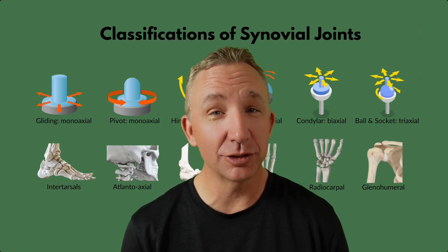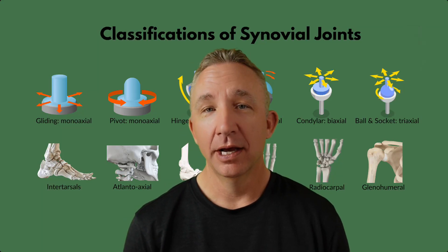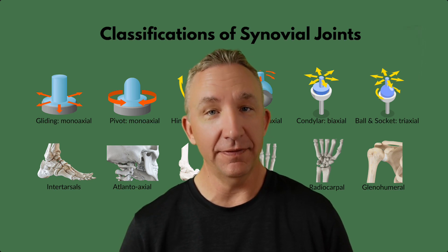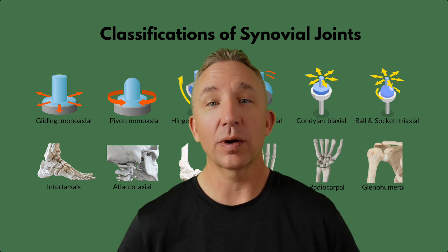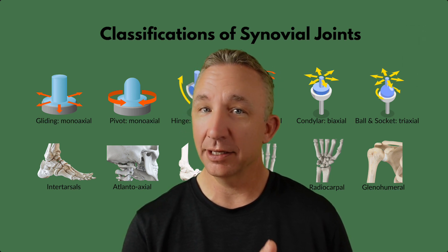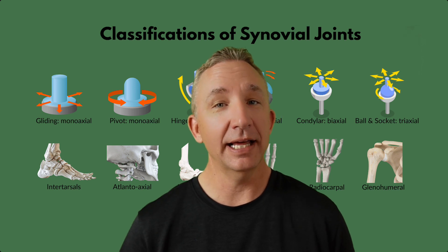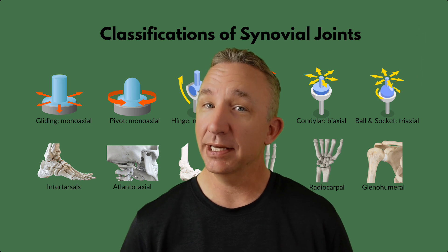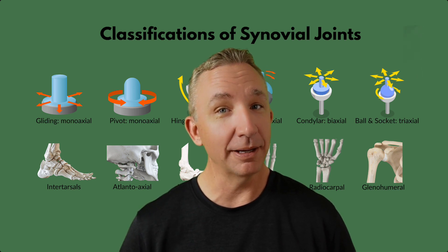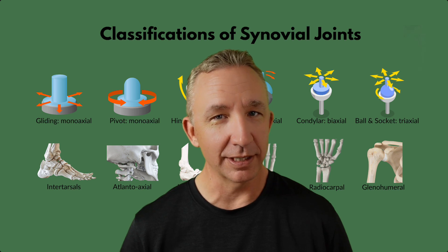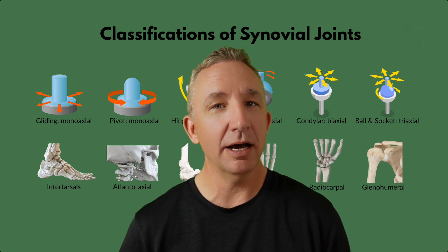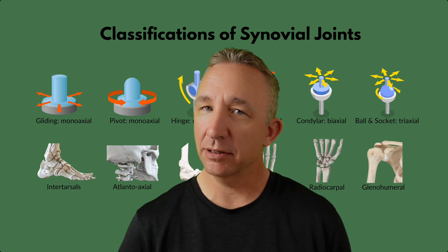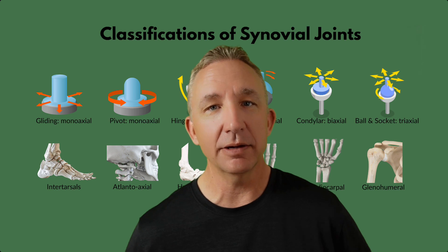We're covering different types of synovial joints and how they move. In previous videos, we organized our joints based on structure — fibrous joints with fibrous connective tissue, cartilaginous joints with hyaline or fibrocartilage, and lastly synovial joints, which allow more movement because there is a joint cavity with a synovial membrane that produces synovial fluid. We can now organize synovial joints in six ways based on how they move. Here's a graphic showing arrows and examples in the body.